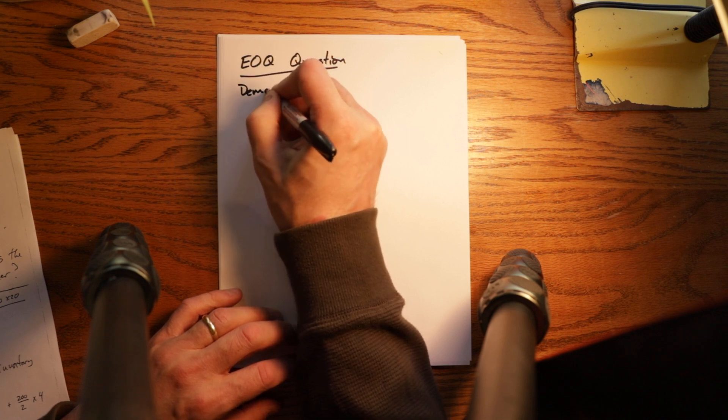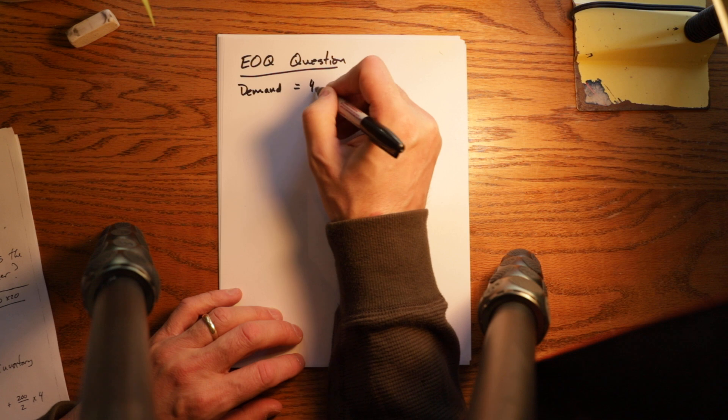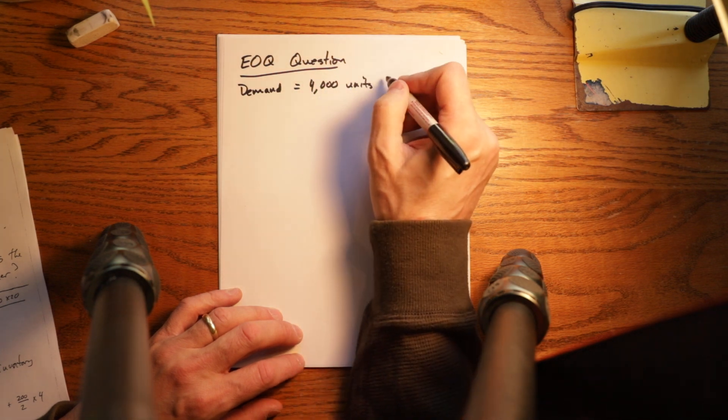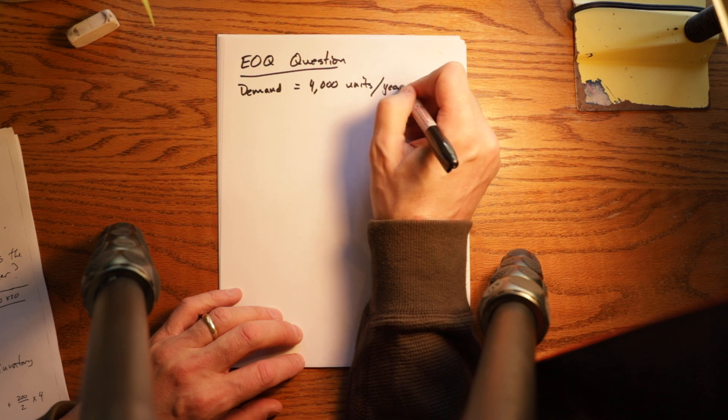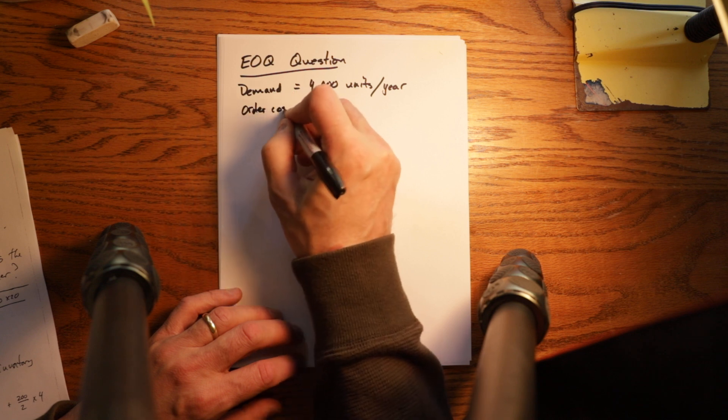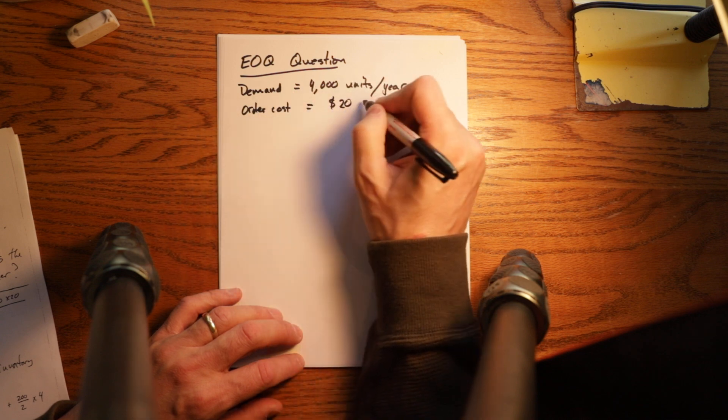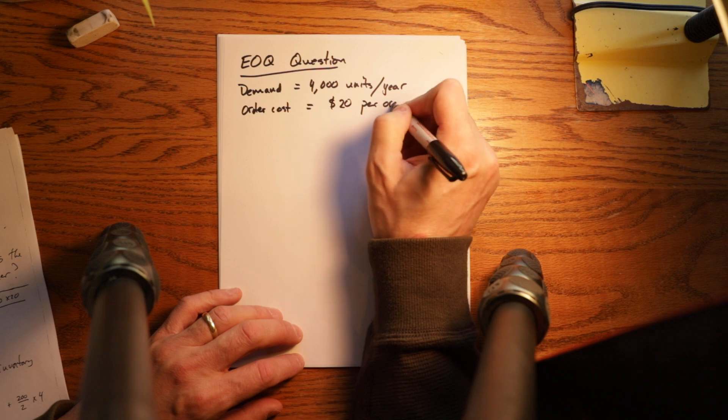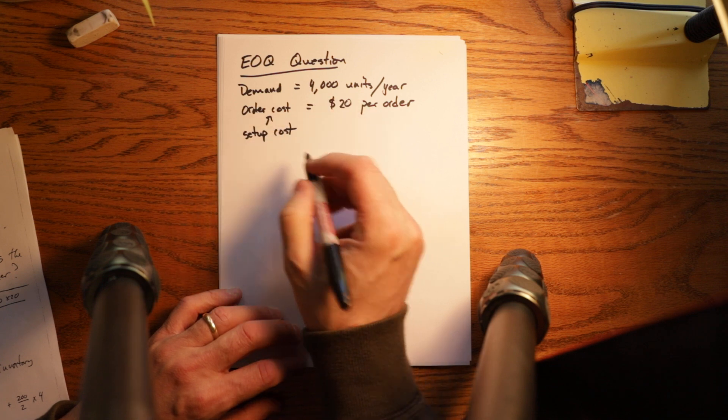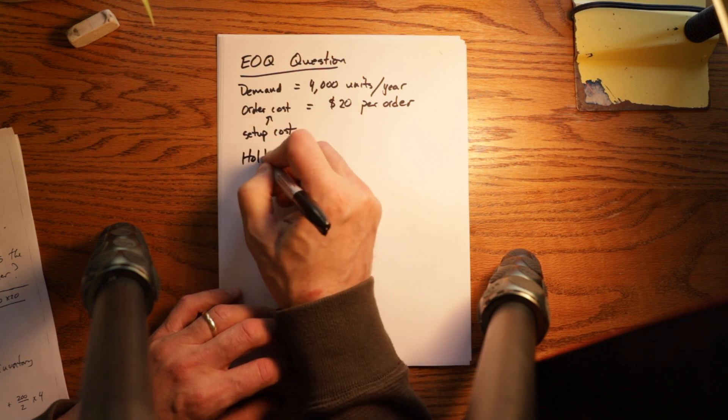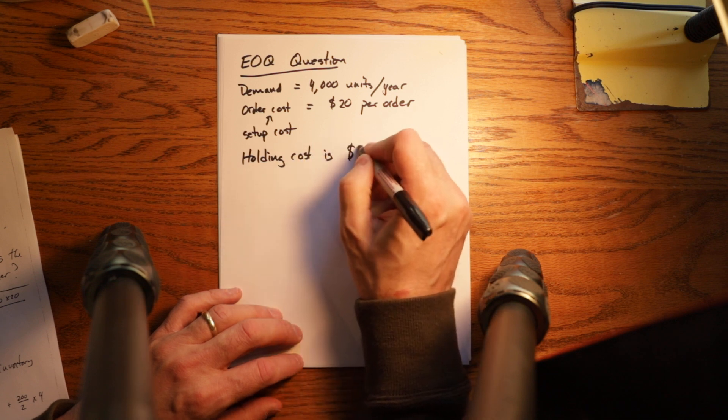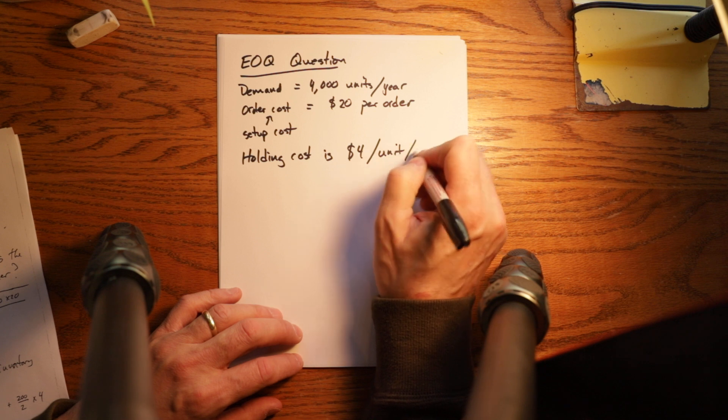So let's look at the parameters. Demand is equal to 4,000 units per year. Order cost is equal to $20 per order. Order cost is synonymous with setup cost and holding cost is $4 per unit per year.